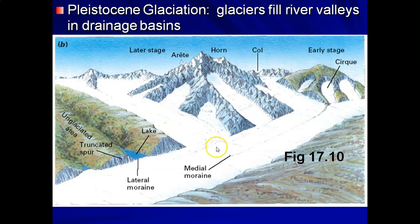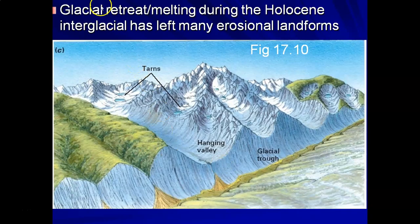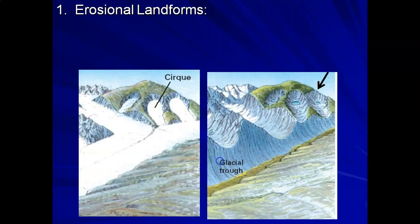Here we've got the height of a glacial cycle during the Pleistocene. Glaciers wind up filling the low spots in high mountain areas, filling up the tributaries, which are now feeding what was once the main river valley. You wind up with small tributary glaciers feeding into much larger ones. Now after glacial retreat or melting during an interglacial — like the Holocene today — what we see is a series of erosional landforms, telltale signs that this area was once covered with alpine glaciers.